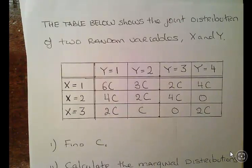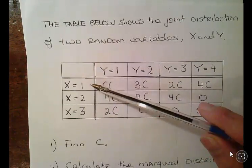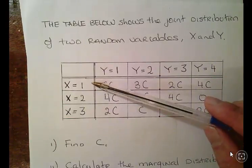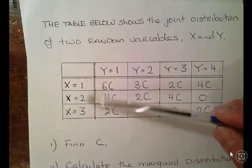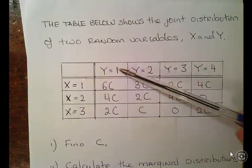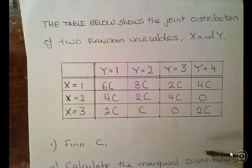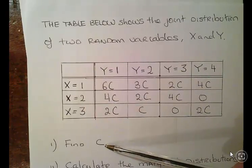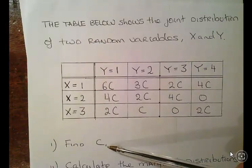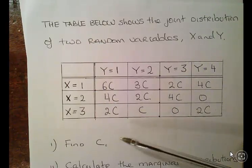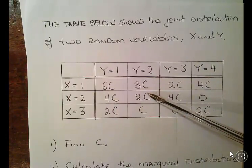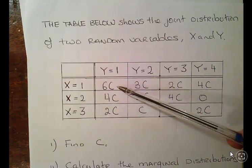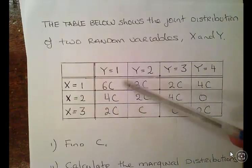In this distribution we are looking at a table which is the joint distribution of two discrete random variables X and Y. X can take the values 1, 2, 3; Y can take the values 1, 2, 3, 4 and so on. This is a continuation of a previous video. The only thing we really need to know here is that c, from the last video, is equal to 1 over 30. So this is actually 6 over 30, 4 over 30 — that's the joint probability.